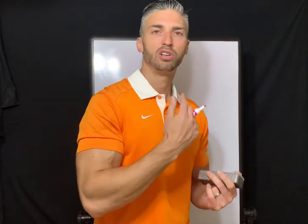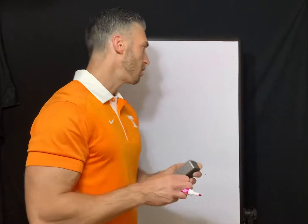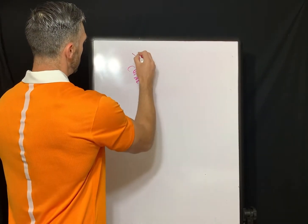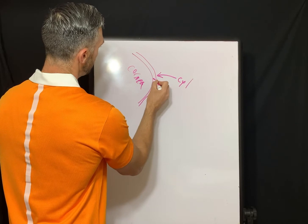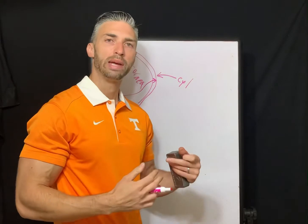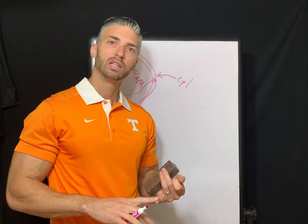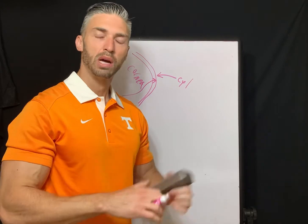A front surface toric lens has a spherical posterior surface — the surface of the lens closest to the eye — and it has a sphero-cylindrical anterior surface. So the cylindrical component is on the front and the posterior surface is spherical; that's why we call it front surface toric. A bi-toric lens has a toric anterior surface and a toric posterior surface — that's why it's bi-toric.